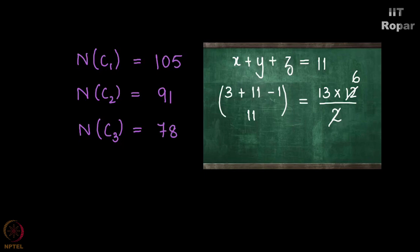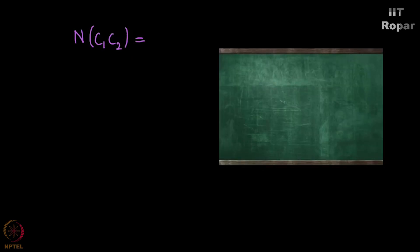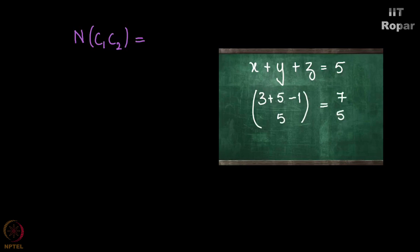Moving ahead to calculating n of C1∩C2: we must find the number of solutions for x plus y plus z equals 20 where x is greater than or equal to 7 and y is greater than or equal to 8. Removing both conditions, it is equivalent to x plus y plus z equals 5, because 7 plus 8 is 15. We have 3 plus 5 minus 1 choose 5, which is 7 choose 5, which is 7 into 6 by 2, which is 21. So n of C1∩C2 is 21.